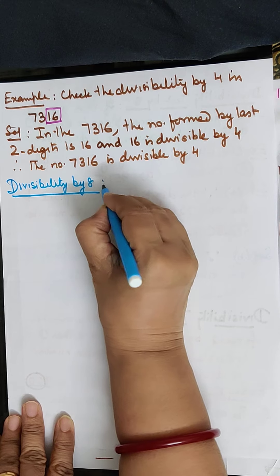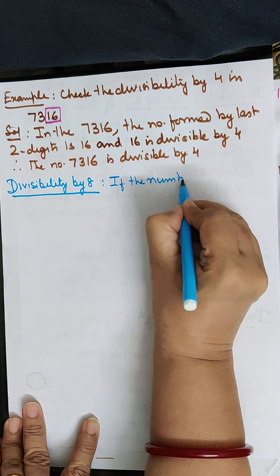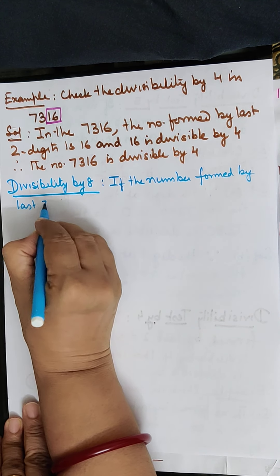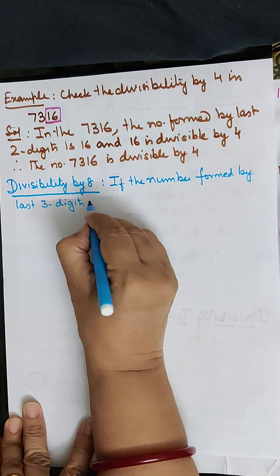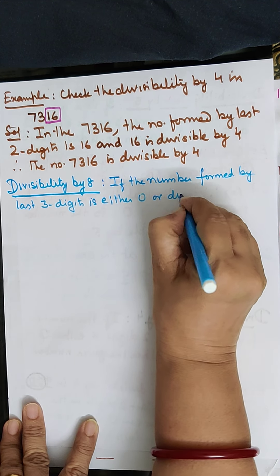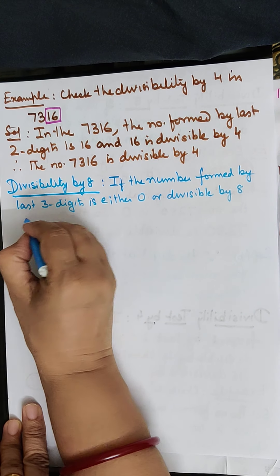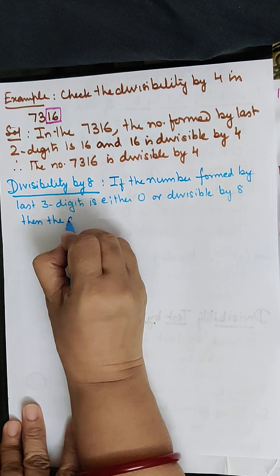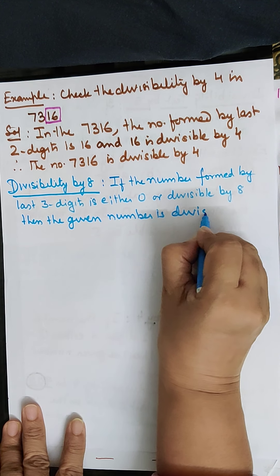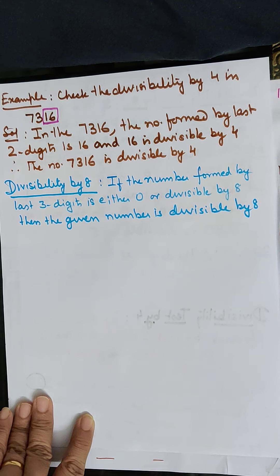Now next is divisibility by 8. If the number formed by the last three digits is either 0 or divisible by 8, then the given number is divisible by 8. Let us take one example.